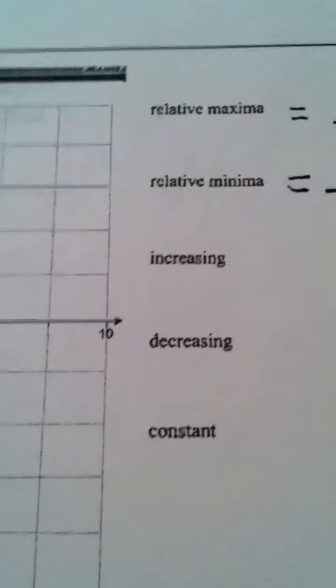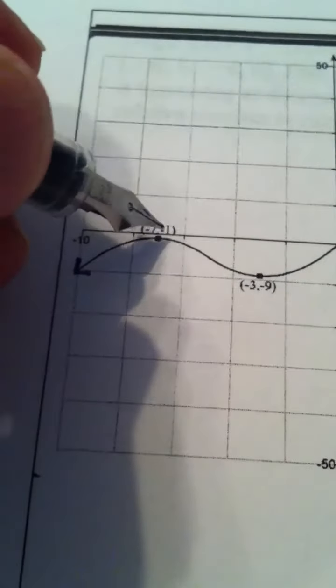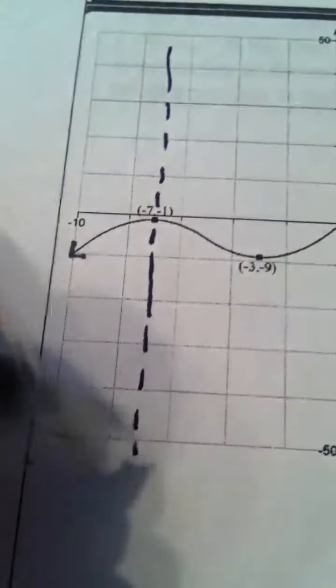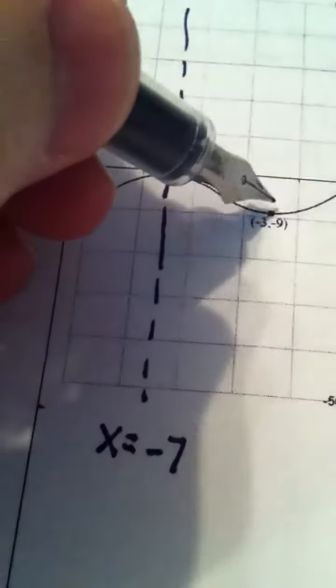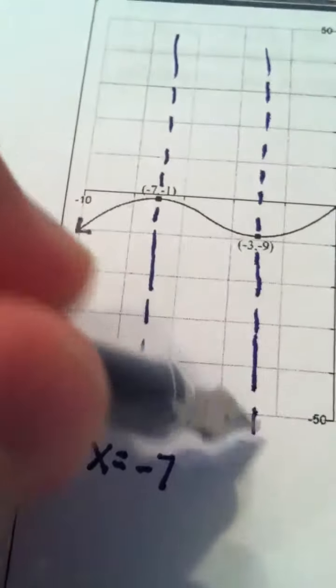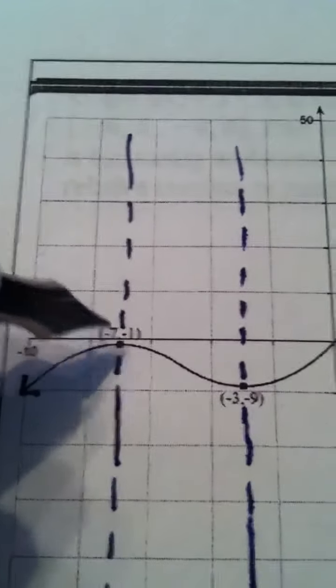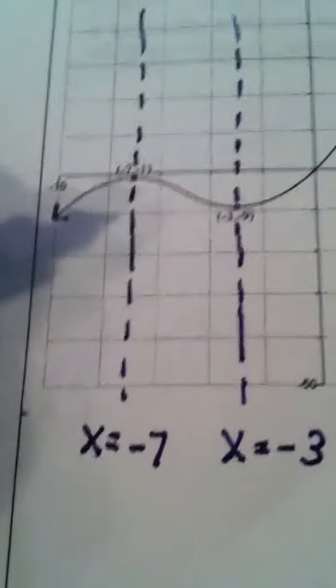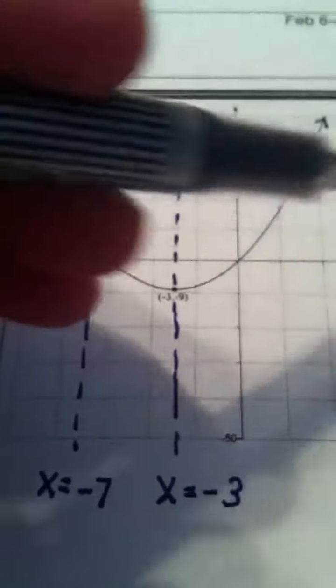Okay, increasing, decreasing, and constant. Well, let's see. Always answered in terms of x. I'm going to put a little dotted line here, and that is the line x equals negative 7. I'm going to put a dotted line here, and that is the line x equals negative 3. Okay? Because, of course, x is negative 7 there, and x is negative 3 here. And those dotted vertical lines help me see where my graph is changing from increasing to decreasing.